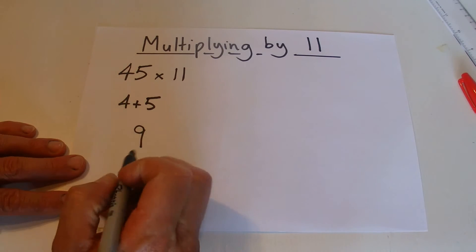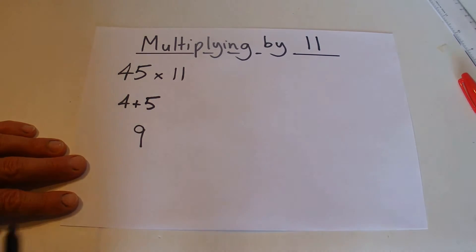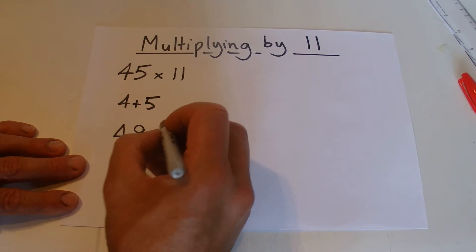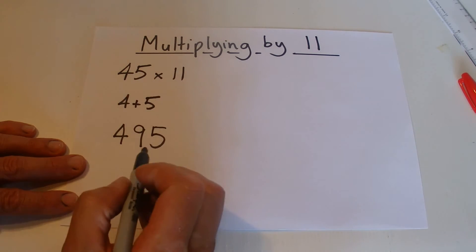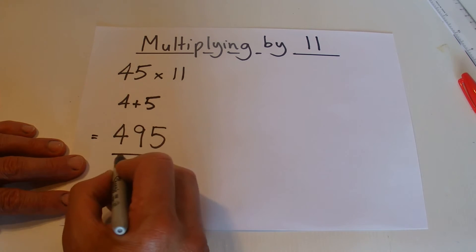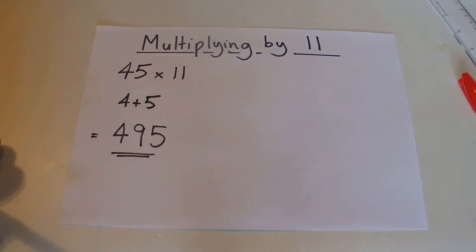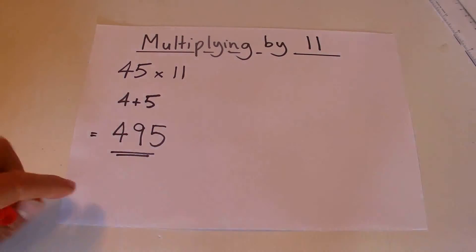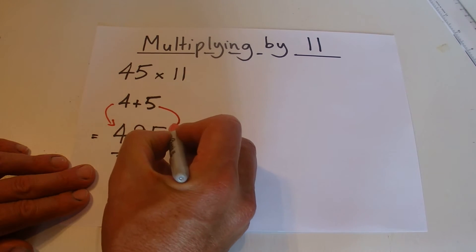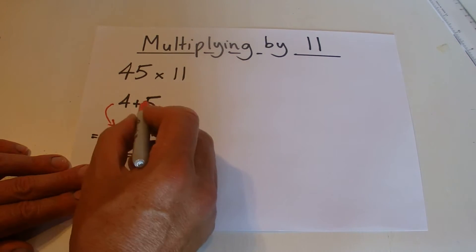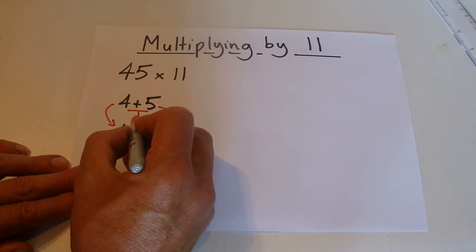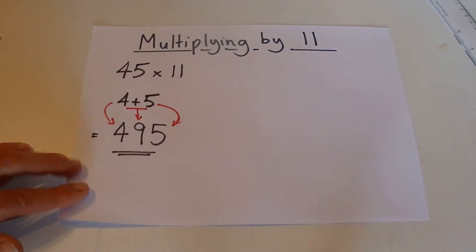And that 9 goes in the middle of your answer. 4 plus 5 is 9, that's in the middle of your answer. And then the 4 from the 45 goes on the left hand side, and the 5 from the 45 goes on the right hand side, and your answer then is 45 times 11 equals 495. You can see there that the 4 on the left hand side, the 5 on the right hand side, and the 4 plus 5 equals the 9, and that goes in the middle.